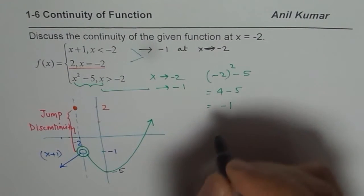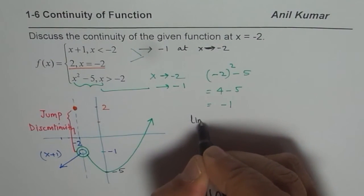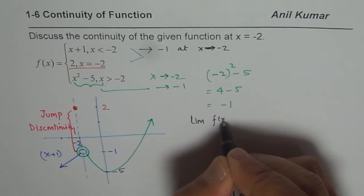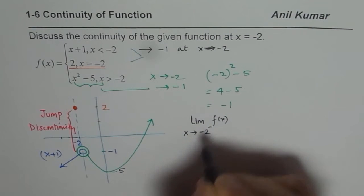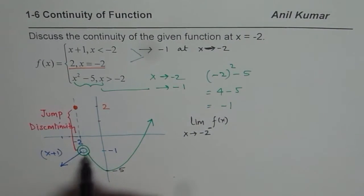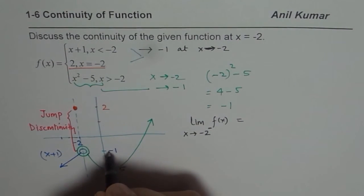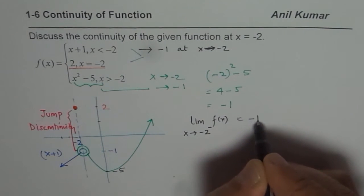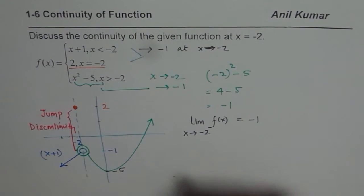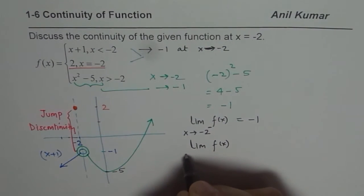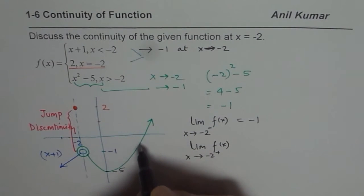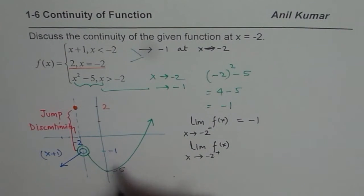We can say limit of f of x as x approaches minus 2 from the negative side, from the left side, it is equal to minus 1. This is the value you approach. Now, we also saw that the limit of the function f of x as x approaches minus 2 from the positive side. So when you approach from the positive side, you again approach minus 1. Both the limits are same.